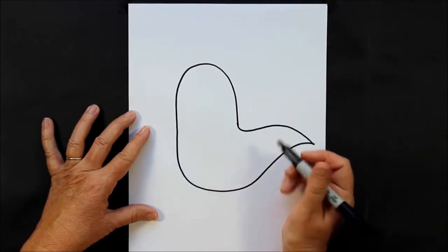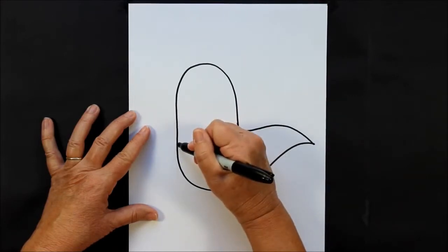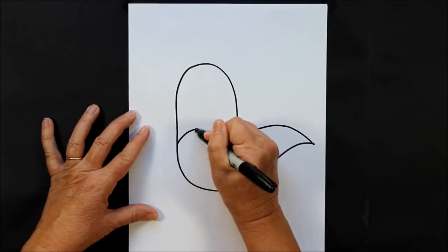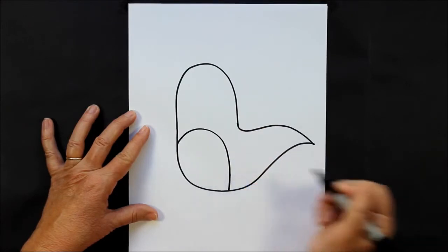Now we are going to create his tummy, so let's start about two-thirds of the way down your first line, and you make like an upside down J.